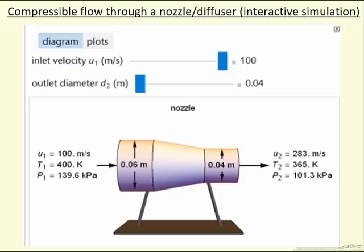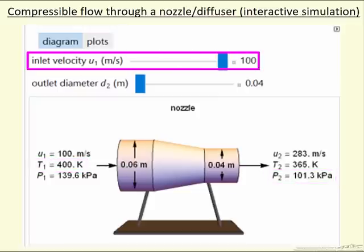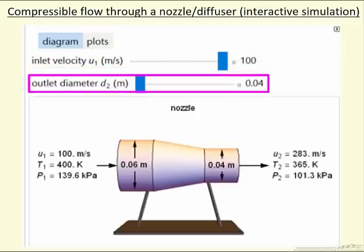This interactive simulation models an ideal nozzle or an ideal diffuser. In this case, we fix the outlet pressure P2, we fix the inlet temperature, and then we can change the inlet velocity with this slider, and we can change the outlet diameter with this slider.